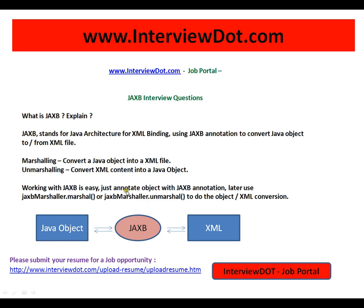Working with JAXP is very easy — just annotate your object with JAXP annotations, then use JAXBMarshaller.marshal and JAXBMarshaller.unmarshal to do the object-to-XML conversion. So if you have a Java object like a POJO class and you want to convert it into an XML file, or from an XML file back to the Java object, this can be done using JAXP.